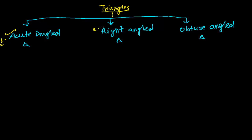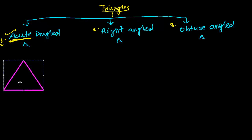First let's learn the acute angle triangle. This is the first one, second one, and the third one. Acute angle triangle — from the name itself, if the triangle has all angles as acute angles, then we can say that the triangle is an acute angled triangle. All the angles are acute, meaning all the angles are less than 90 degrees. Everybody knows that acute angle means less than 90 degrees.